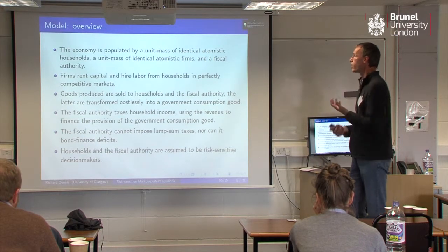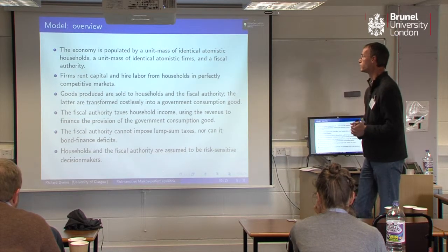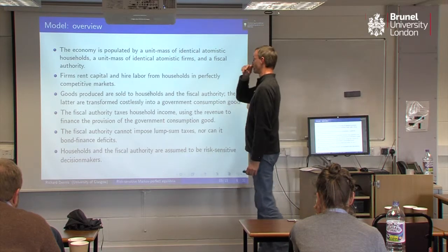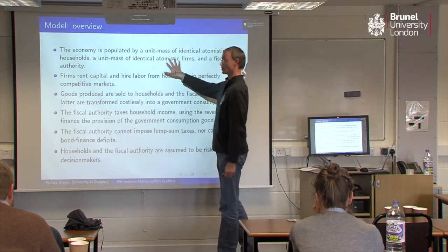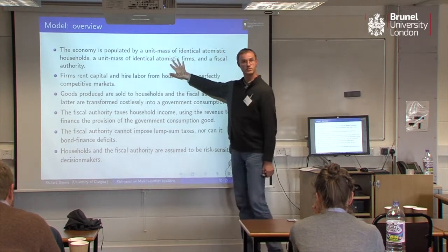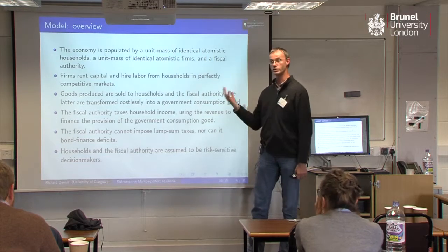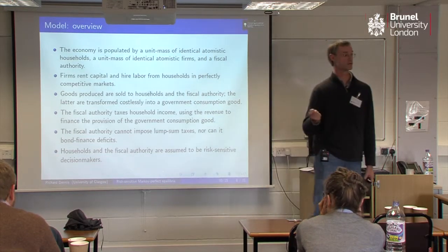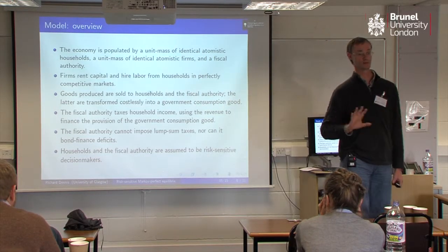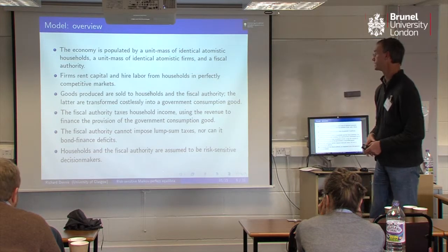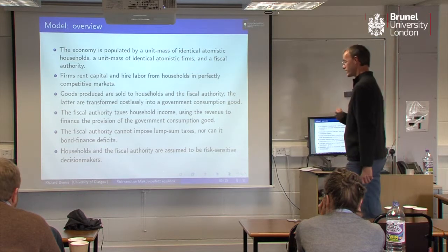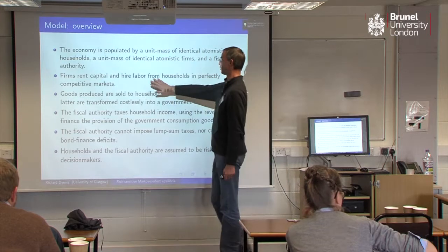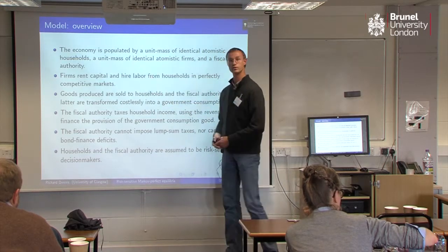So the model itself: we've got three agents — households, firms, and a fiscal authority. Households are all going to be identical, as are firms, so it's a representative agent type environment. We're going to have a rental market for capital and a perfectly competitive spot market for labour.